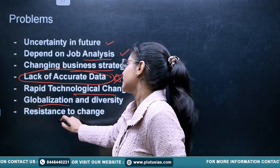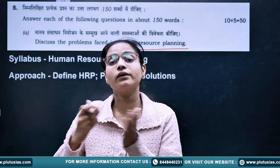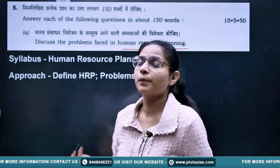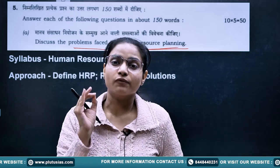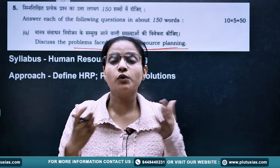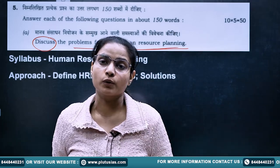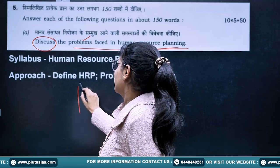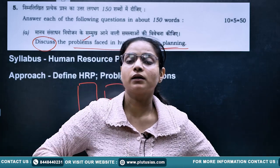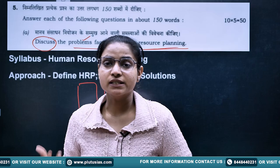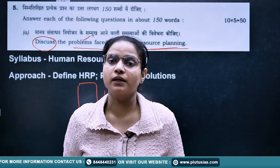Rapid technological change and resistance to change are further problems. In your answer, first define human resource planning, then write the problems — since 'discuss' is used you have discretion, but give more space to the problems. Write about problems across one and a half pages, then provide a way forward and conclusion. You can prepare conclusions in advance, such as 360-degree feedback, technology deployment, or use of AI for data collection, as these are already mentioned in the syllabus.